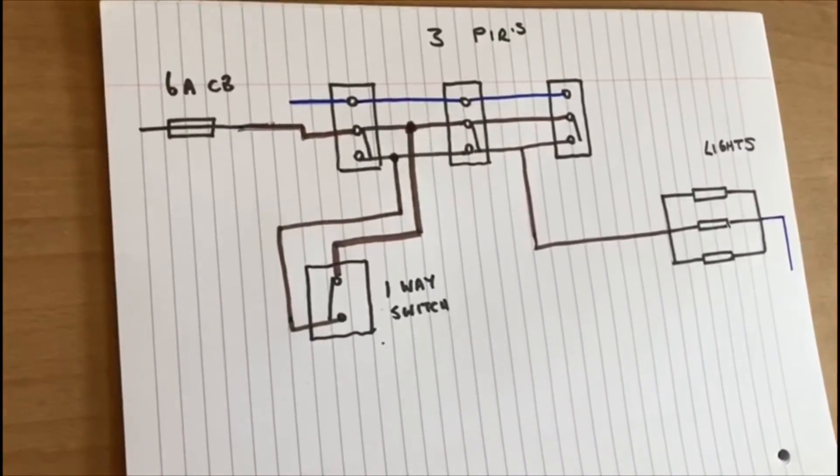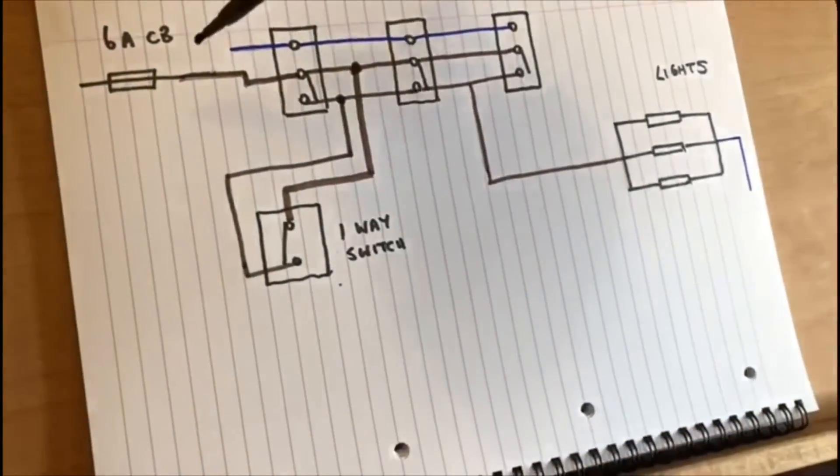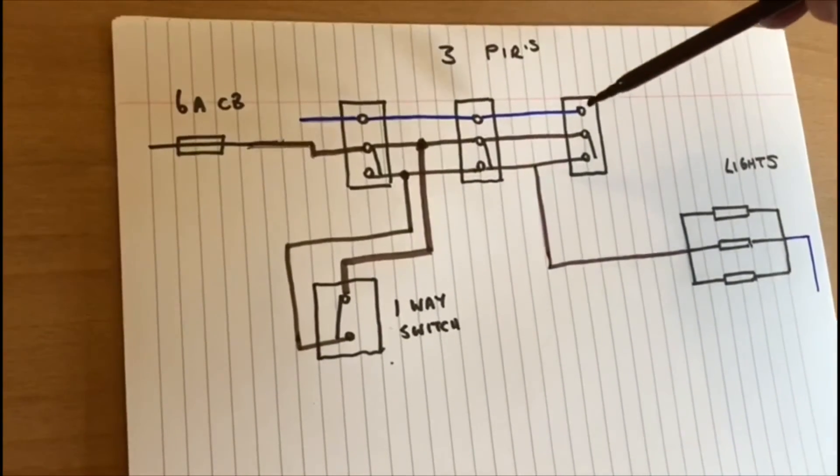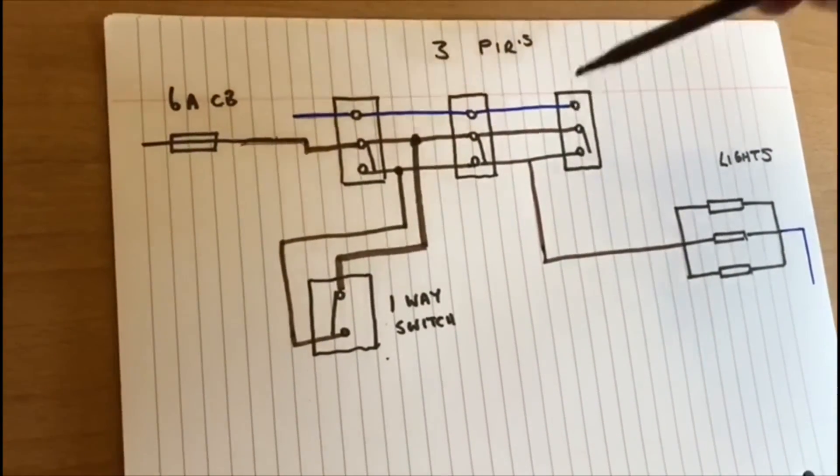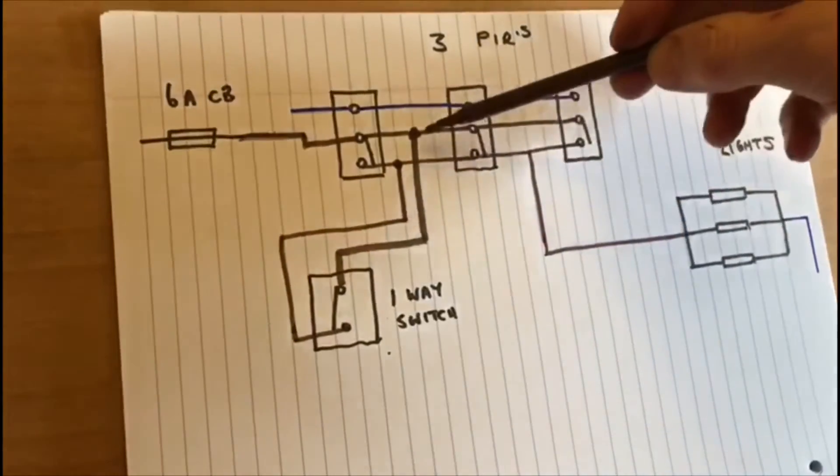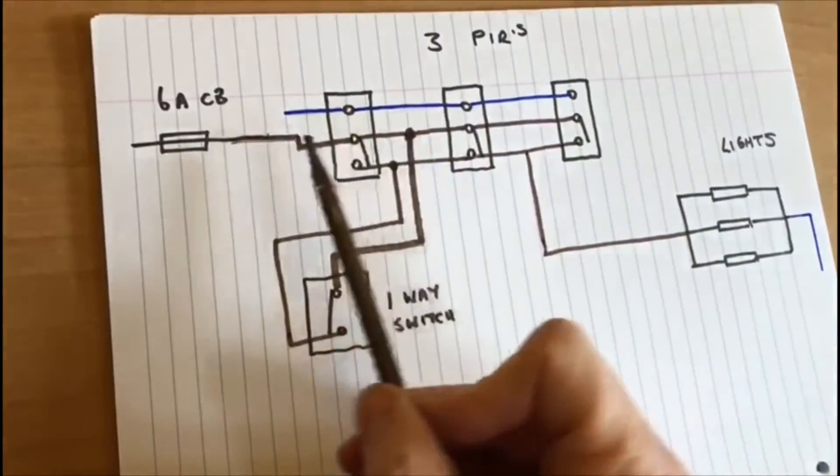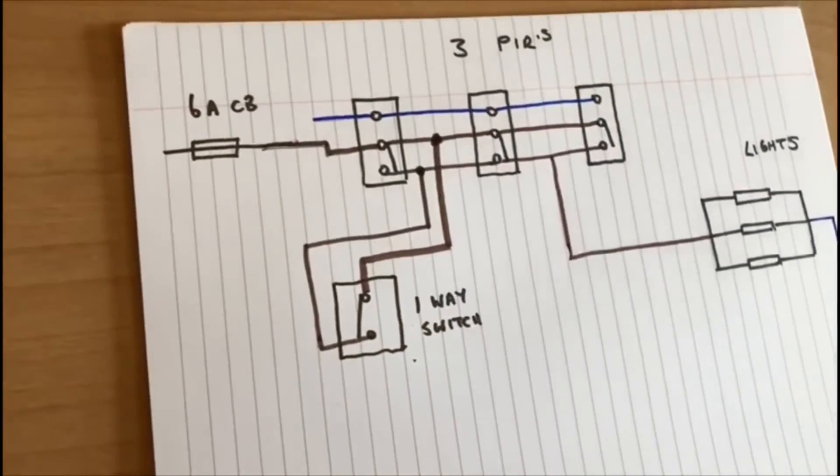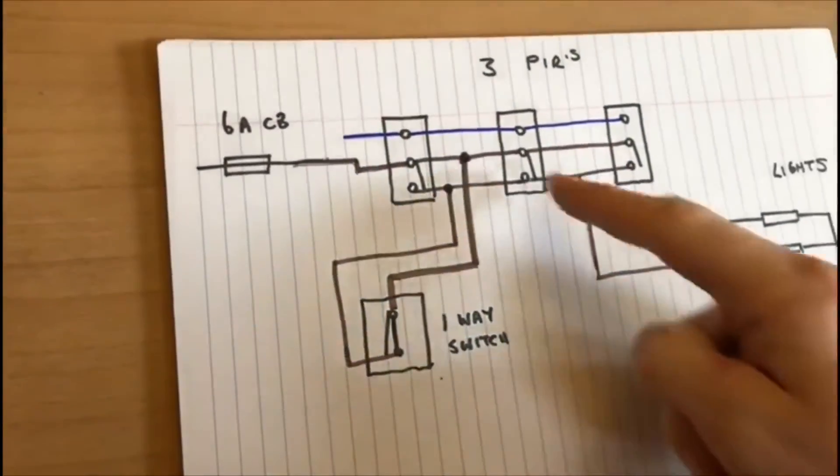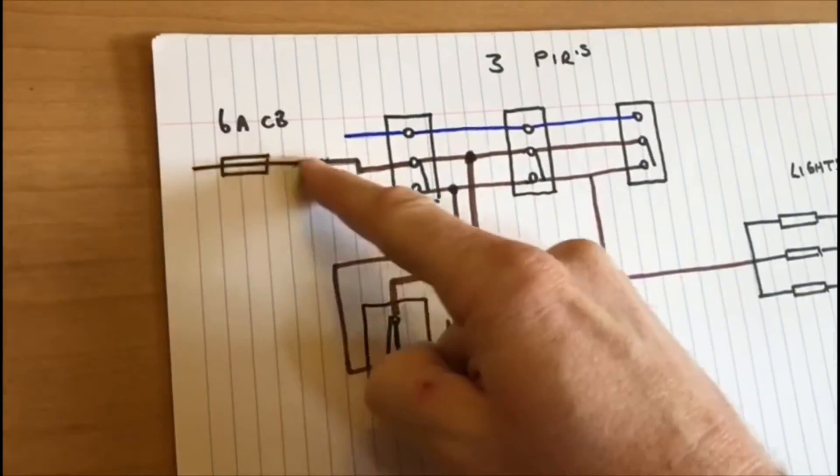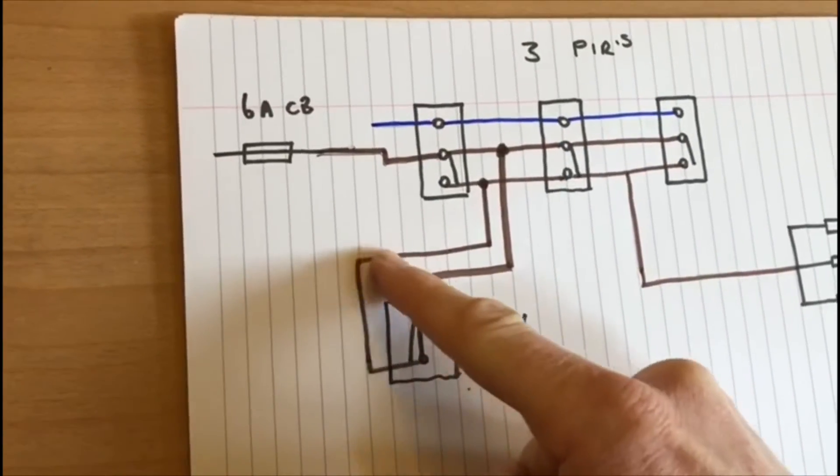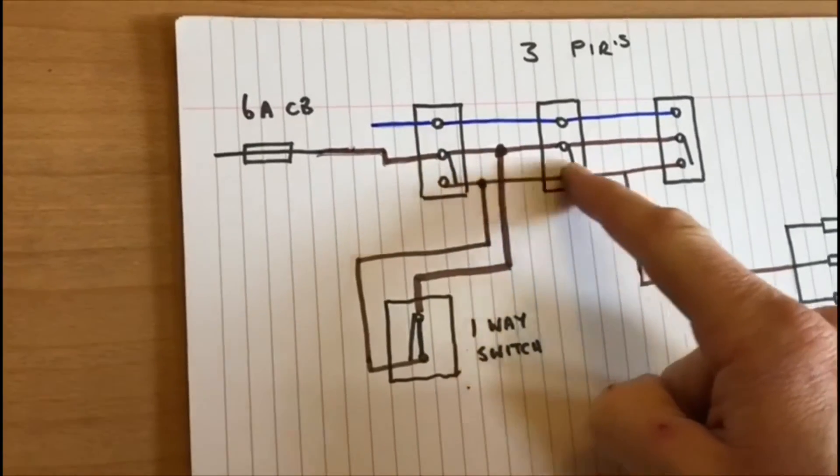We've still got the permanent live running into all three PIRs, so at no point does the permanent live get disconnected. All three PIRs are permanently live. But this time we have a one-way switch. It's still in parallel with these switches, so if this switch was to be closed, now you've got a circuit running through here, down through here, down through the switch, back up.